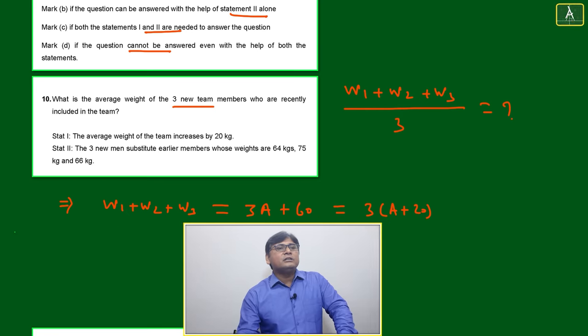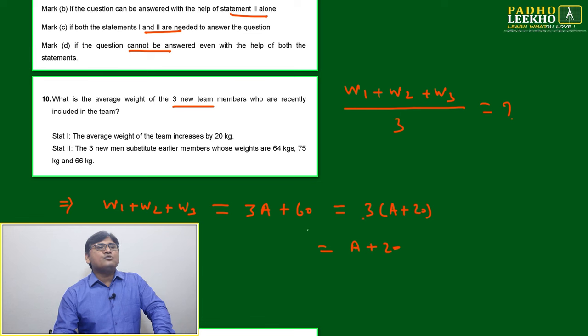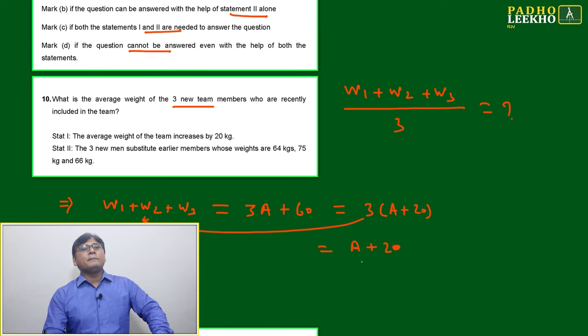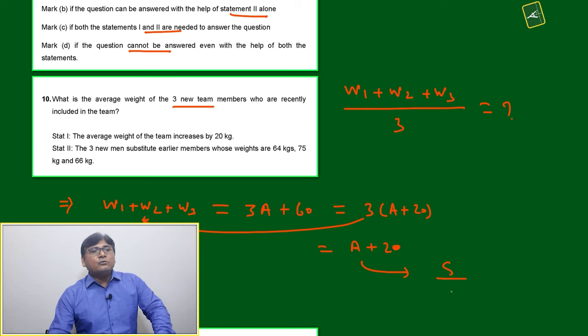Then 3A plus 60. Then the issue is there. If you want to find W1 plus W2 plus W3 divided by 3, then it will become A plus 20. This 3, you just shift this side in denominator, it will become A plus 20.